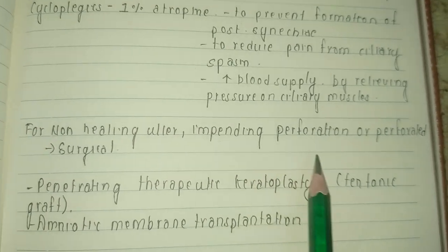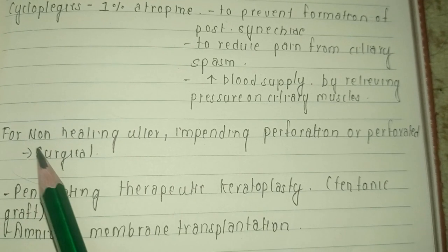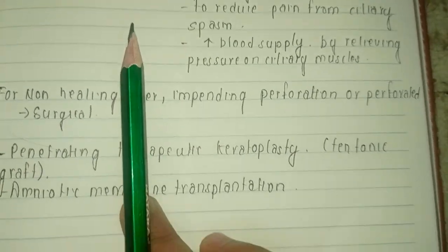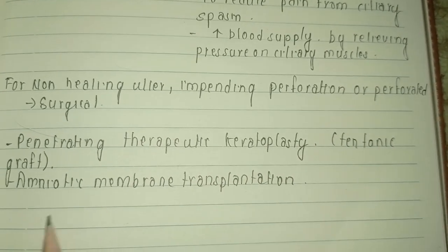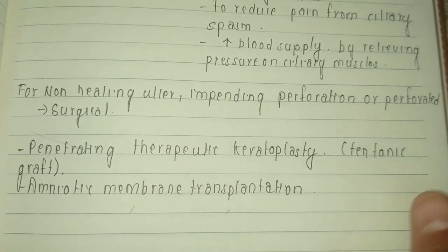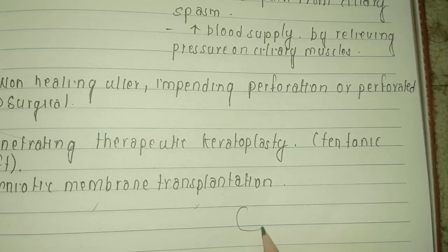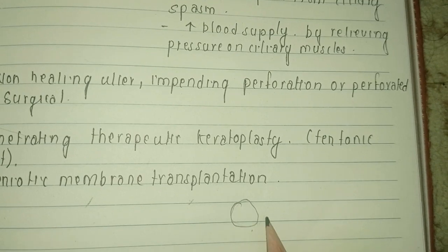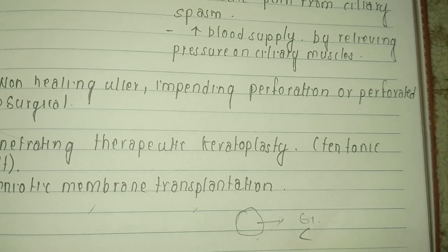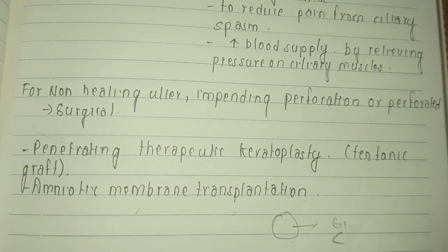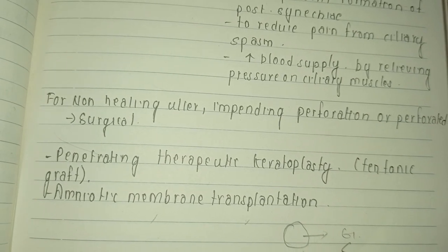For non-healing ulcers, those with impending perforation, or those already perforated, surgical intervention is indicated. Surgical options include penetrating therapeutic keratoplasty using a tectonic graft or amniotic membrane transplantation. For investigation, corneal scraping is performed: using a spatula to scrape the base of the cornea, and the sample is used for Gram stain, cultures, or other investigations.